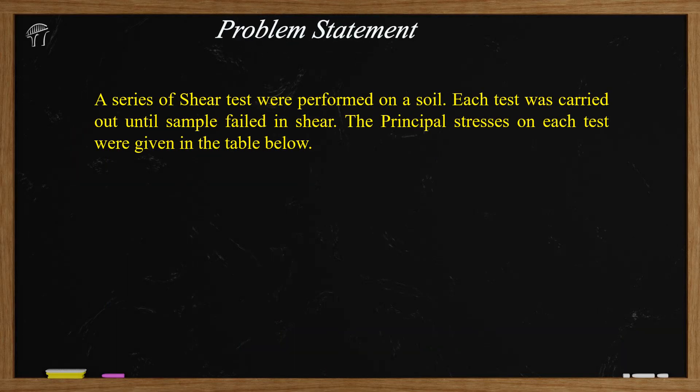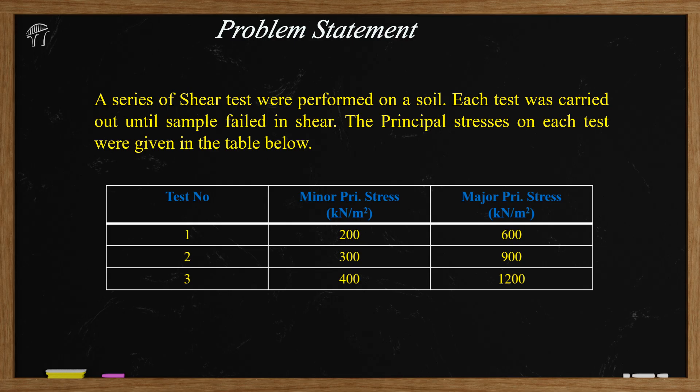This is the problem statement that we have been given. Please read the problem statement later on. Basically what is given to us is there is a soil on which three triaxial tests are performed and we have got the values of sigma 3 and sigma 1, that is minor and major principal stresses for each set of stress.